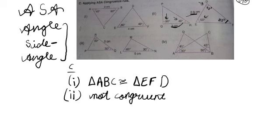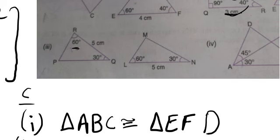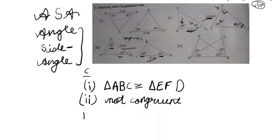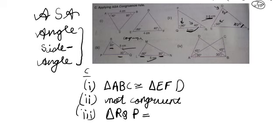Third sub-part: the angles given are 60 degrees and 30 degrees in the first triangle, and 60 degrees and 30 degrees in the second triangle. The side also measures 5 centimeters and 5 centimeters. So these triangles are congruent. Now, how are they congruent? We write them in a proper sequence. Taking the given side RQ as 5 centimeters, triangle RQP is congruent to... LN is 5 centimeters, so triangle LNM.